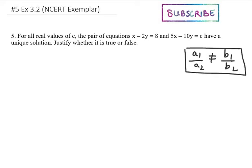So a1 here is 1, a2 here is 5. b1 is minus 2 and b2 is minus 10. You can see that the first two values are equivalent.